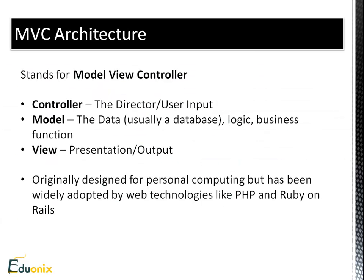The MVC architecture stands for Model-View-Controller. The controller handles user input — when someone submits a dynamic form, it goes to the controller, which decides what to do with it, potentially passing it to the model. The model deals with the database and business logic. The controller is also sometimes called a traffic controller, front controller, or director. The model goes into the database, runs queries like selecting all from an employees table, and passes results back to the controller.